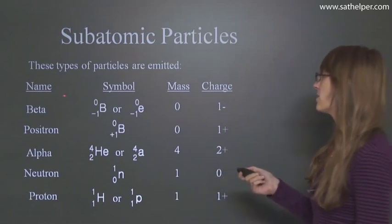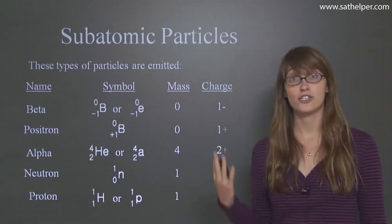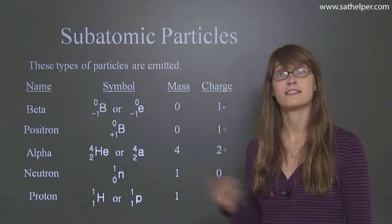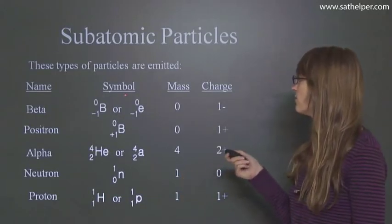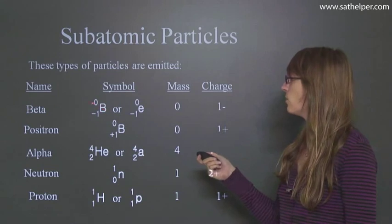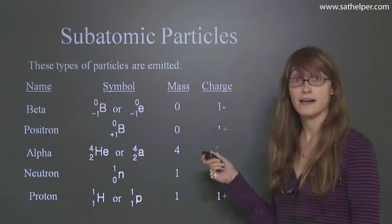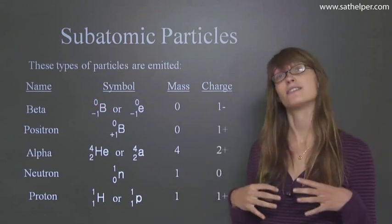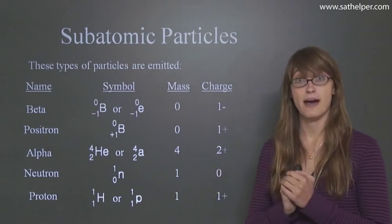First we have a beta particle. A beta particle, you should remember, is just an electron. That's all it is. It's the same thing. So the symbol for a beta particle is B with a zero up top for the mass. Remember we had our accessories for the elements. The top left corner gives you the mass, and the bottom left corner gives you the charge.